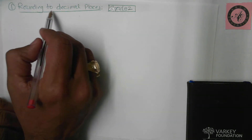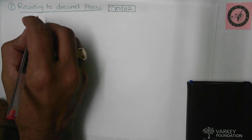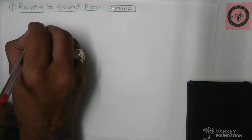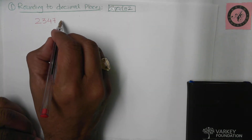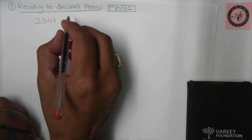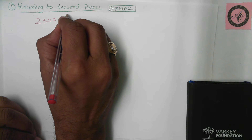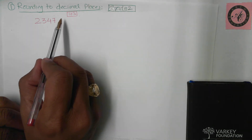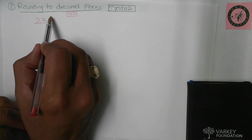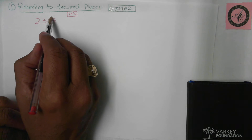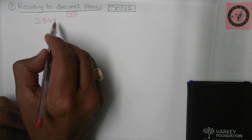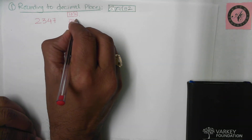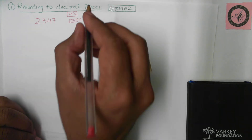We're doing rounding to decimal places first. The number is 2347 — two thousand three hundred and forty-seven — and this is to be rounded to the nearest tens. We look at the tens place, which is four, and the next digit is seven. Seven is five and above, so forty-seven rounds up to fifty. That gives us two thousand three hundred and fifty.